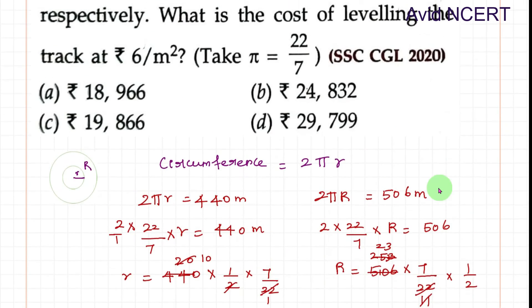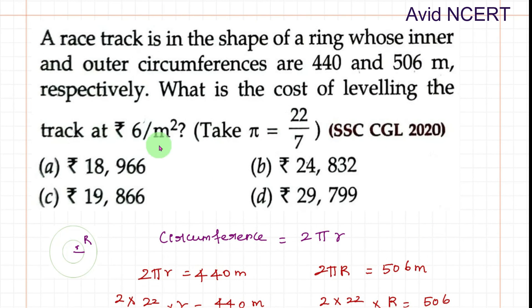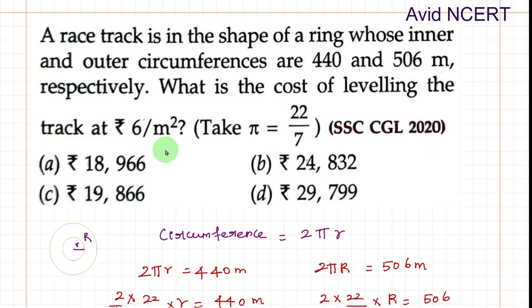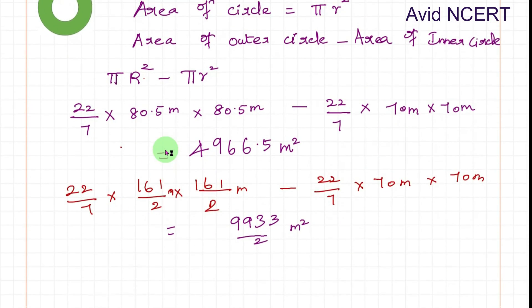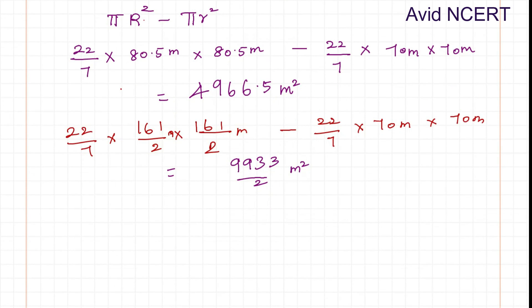From the next sentence, the cost of leveling the track is rupees 6 per meter square. So for per meter square, it's 6. Therefore, for this one, anyway you will be getting the same answer.